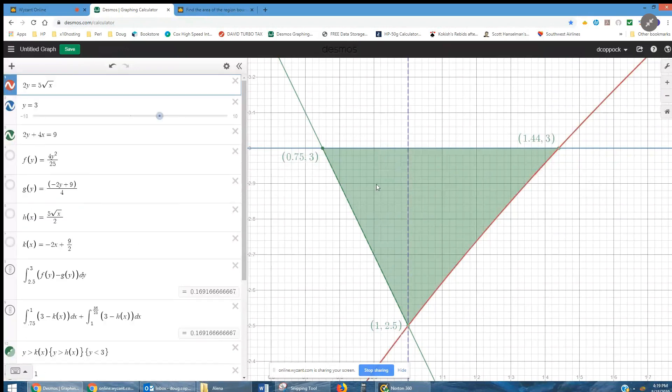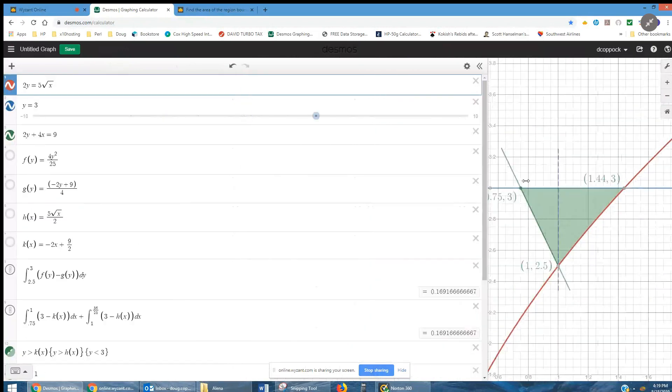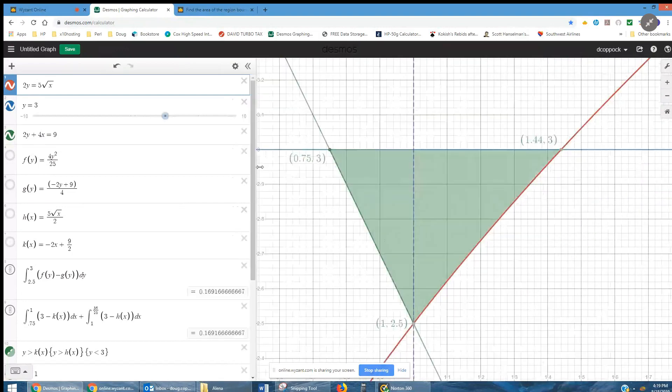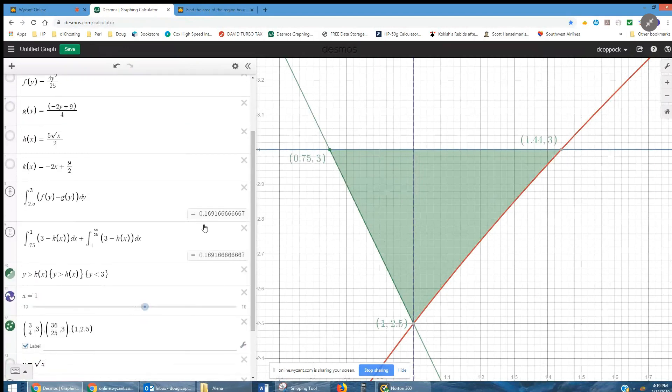the distance from here all the way over to here is this 4y squared divided by 25. And then if I subtract g of y, I get the length of the rectangle. And this is the value of that definite integral, 0.16916666.